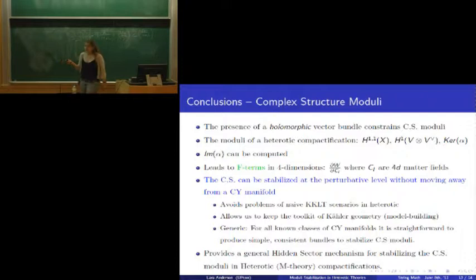In fact, the moduli of the heterotic compactification are not what I put on my first slide. They are, in fact, the Kähler moduli, the bundle moduli, and some subset of the complex structure moduli, which can be computed. This leads to F terms in the four-dimensional theory, and you can use either of these viewpoints to determine that the complex structure moduli can be stabilized at the perturbative level without moving away from the Calabi-Yau manifold.